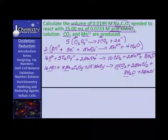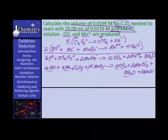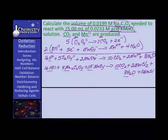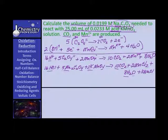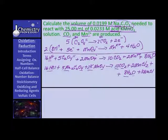Okay, so now sodium is balanced. We've got 10 carbons and 10 carbons. Oxygen's already balanced. And we have two potassiums over here. Two potassiums — where's the potassium going to go? Well, it's got to go with chloride, I guess. So how about two potassium chlorides?